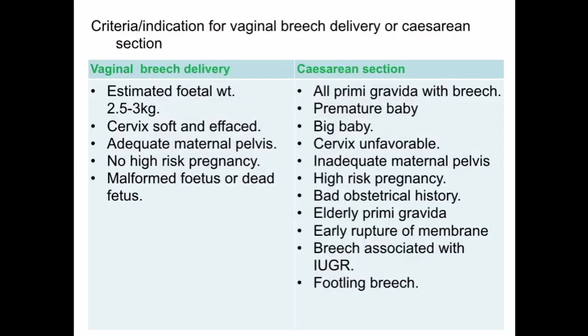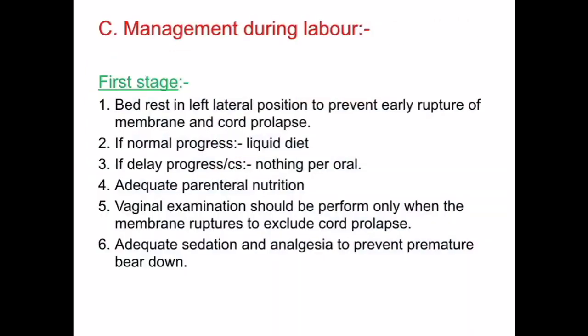Indications for cesarean section include: primigravida with breech, premature babies, big babies, unfavorable cervix, inadequate maternal pelvis, high-risk pregnancy, bad obstetric history, elderly primigravida, early rupture of membranes, breech associated with intrauterine growth retardation, and footling breech.